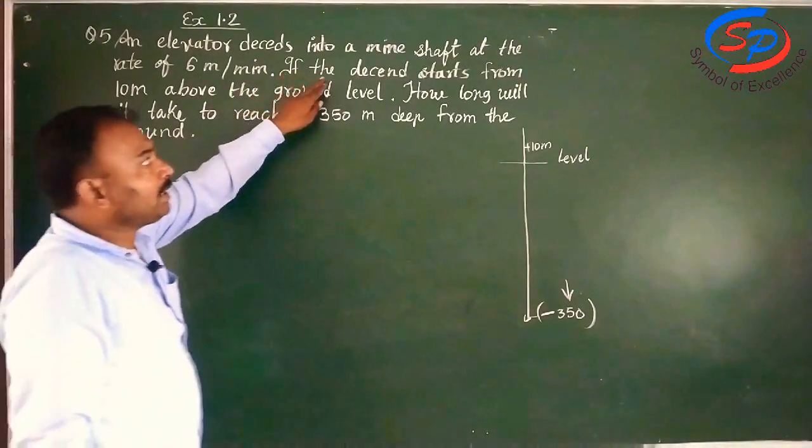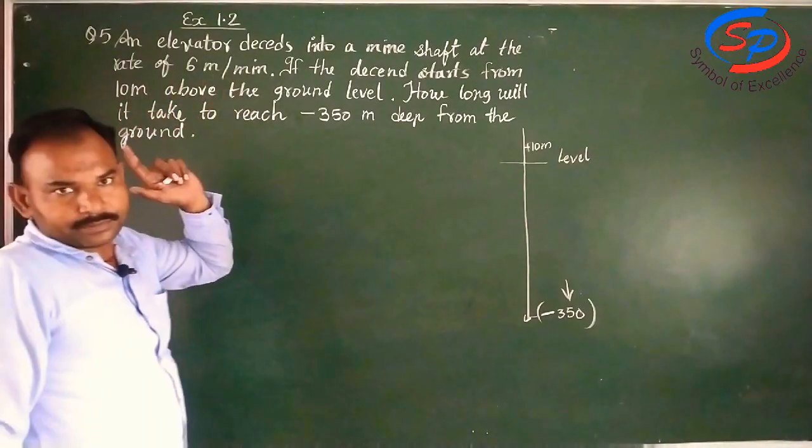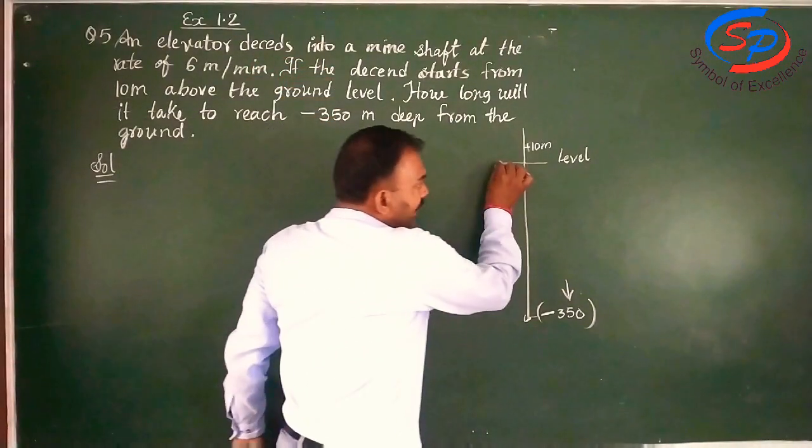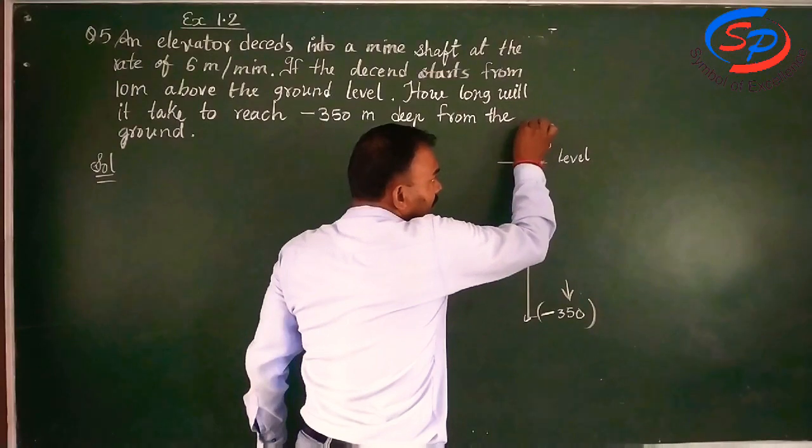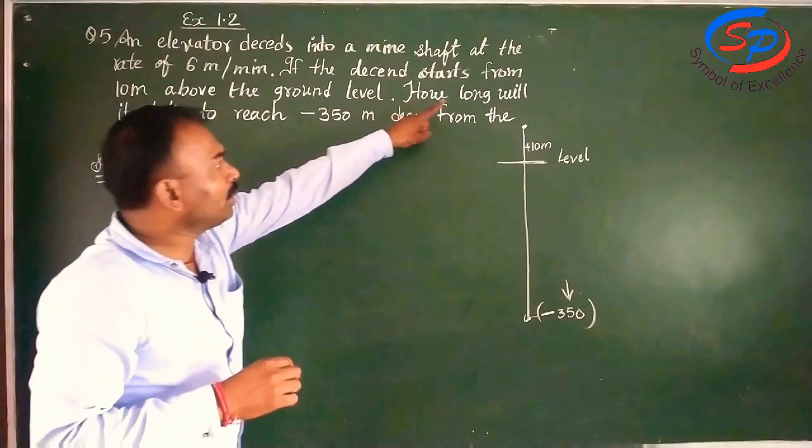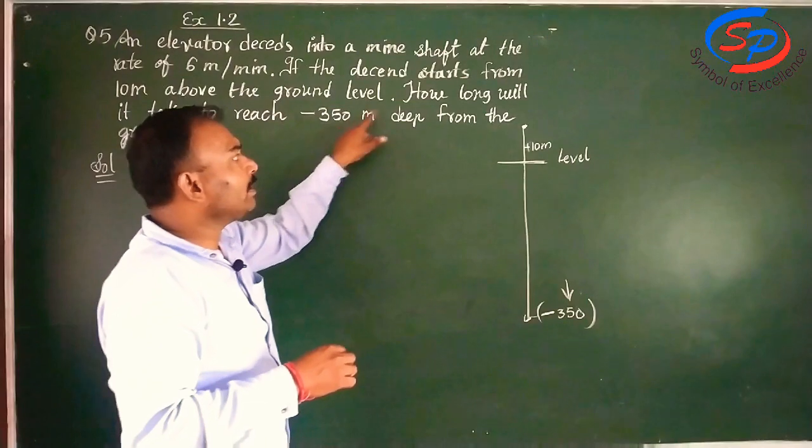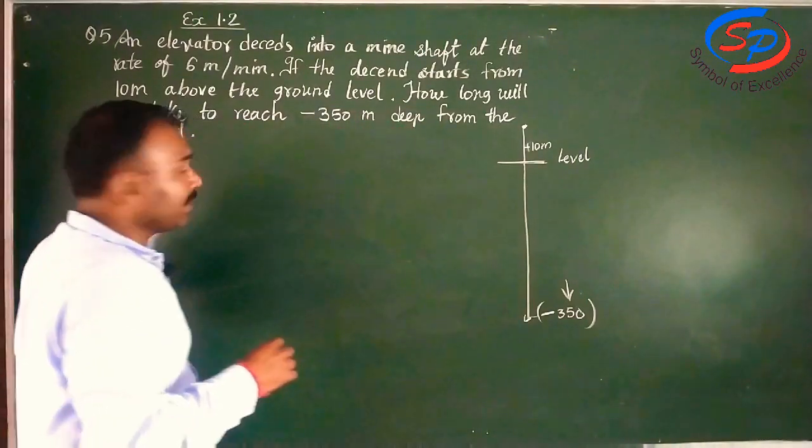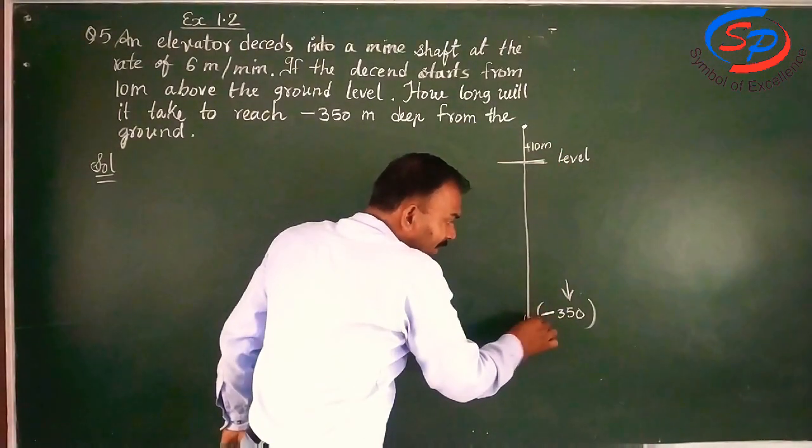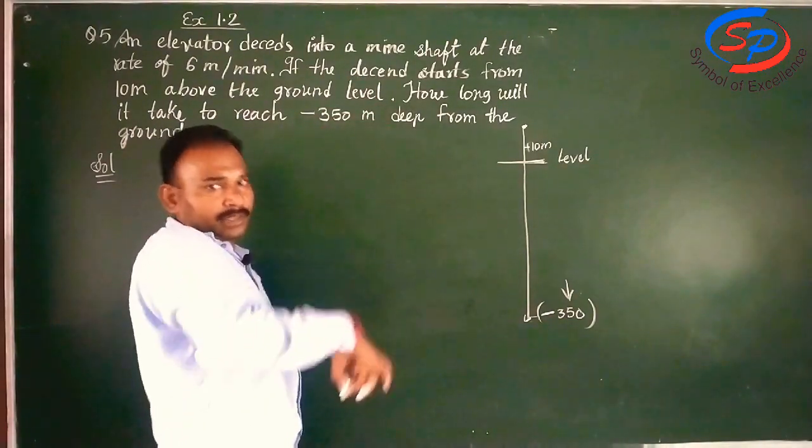If that descent starts from 10 meter above the ground. Suppose this is the ground level, we start from 10 meter above. Then how long will it take to reach minus 350 meter deep from the ground? They have said that from the ground, 350 meter deep.